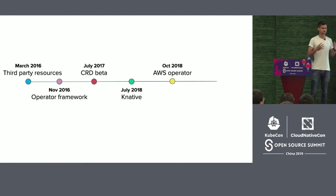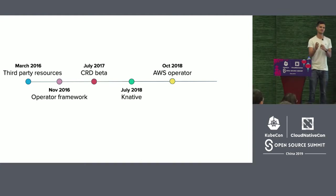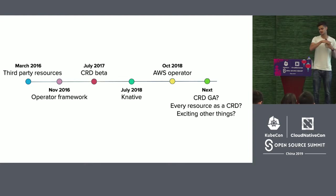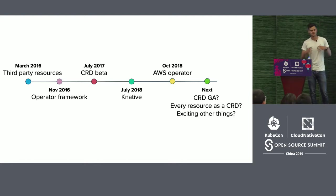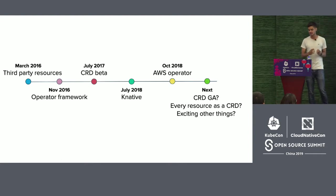AWS released an operator that was special: it didn't act on resources within your cluster — instead it acted on resources in AWS's public cloud. As a developer, you create a custom resource asking for infrastructure, and the operator goes to Amazon's cloud to provision it. This is an interesting example of the operator pattern used to manage something completely different than workloads. In the near term, CRDs are hoping to go GA, and there's a movement to use CRDs to replace some native resources in core Kubernetes.